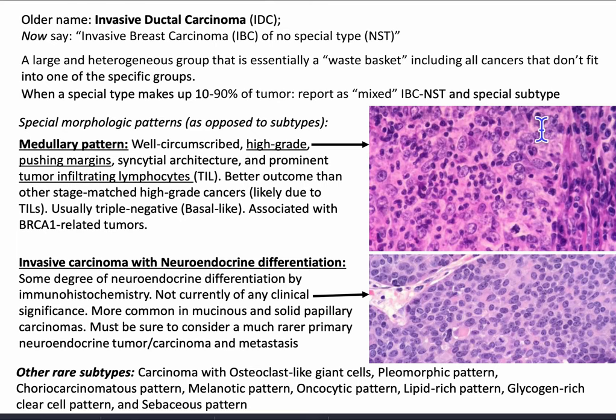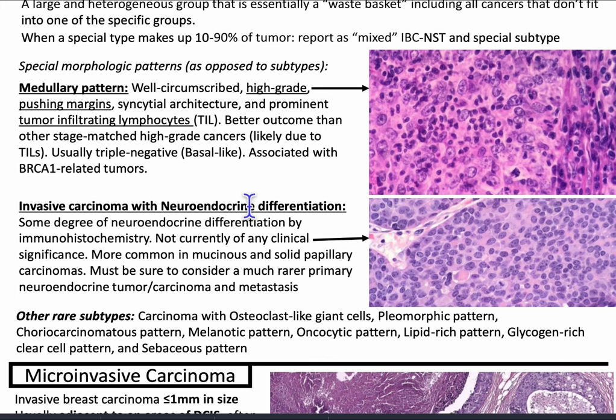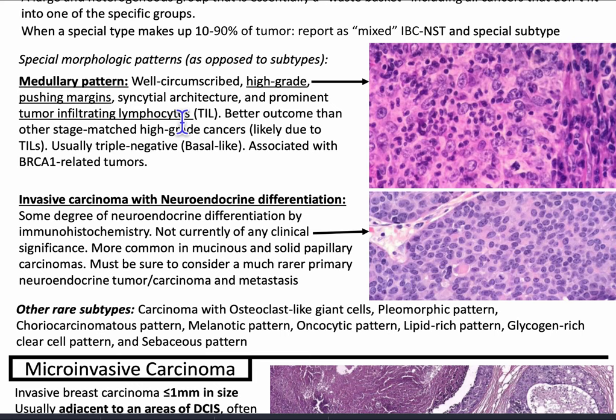The special morphologic patterns include the medullary pattern. This is described as well-circumscribed with high-grade cytologic features — a cell can fit five or six lymphocytes — a pushing margin, syncytial architecture, and prominent tumor-infiltrating lymphocytes, as seen in the picture. It has a better outcome than other stage-matched high-grade cancers, likely due to the tumor-infiltrating lymphocytes, usually triple-negative, basal-like, and associated with BRCA1-related tumors.